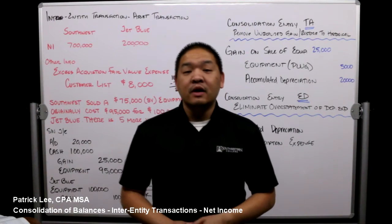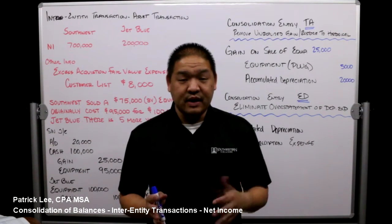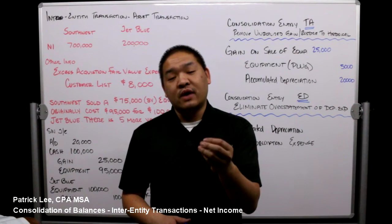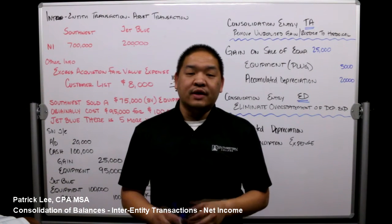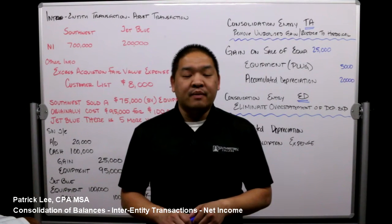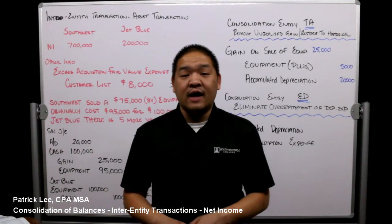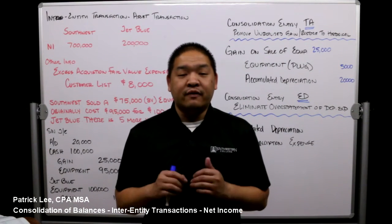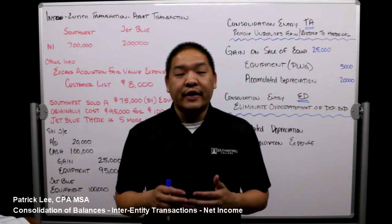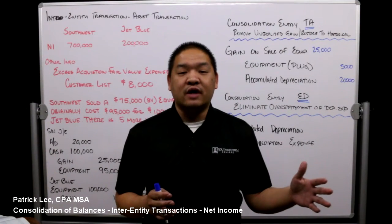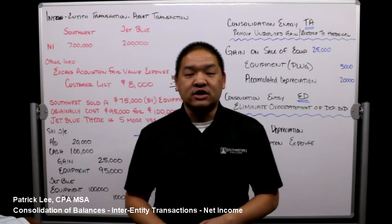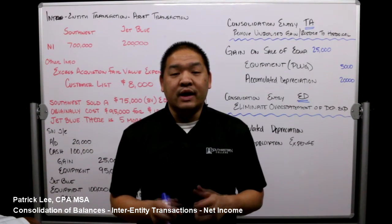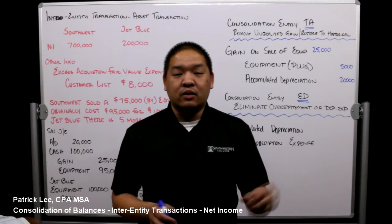We're going to adjust the balance sheet accounts — the assets and accumulated depreciation — but one reason we'll have to adjust the net income account is because when the transaction happens, one of the companies booked either a gain or a loss. By booking that gain or loss, it's what we call an unrealized gain or loss, and because it's unrealized we need to reverse it out. This will help us understand the consolidated net income when inter-entity transactions occur for the sale of equipment and other assets.